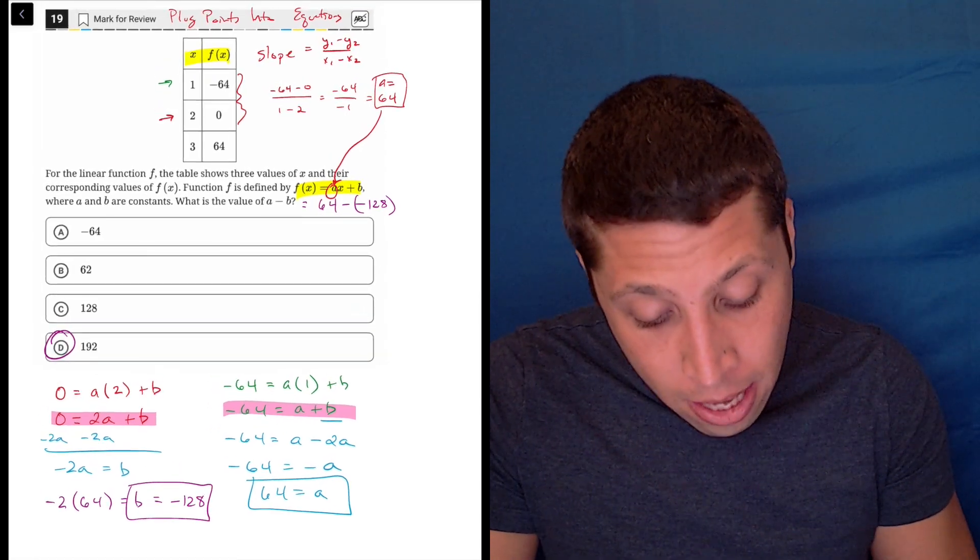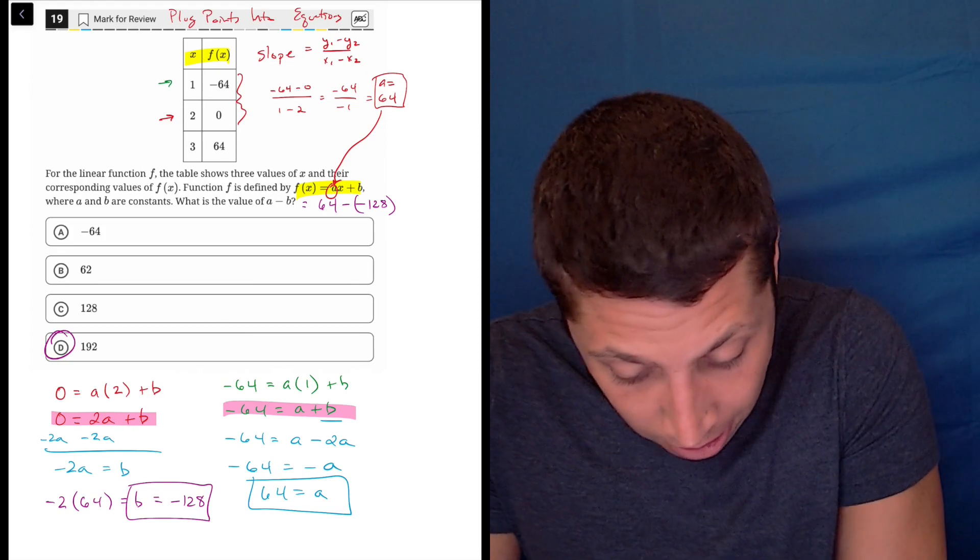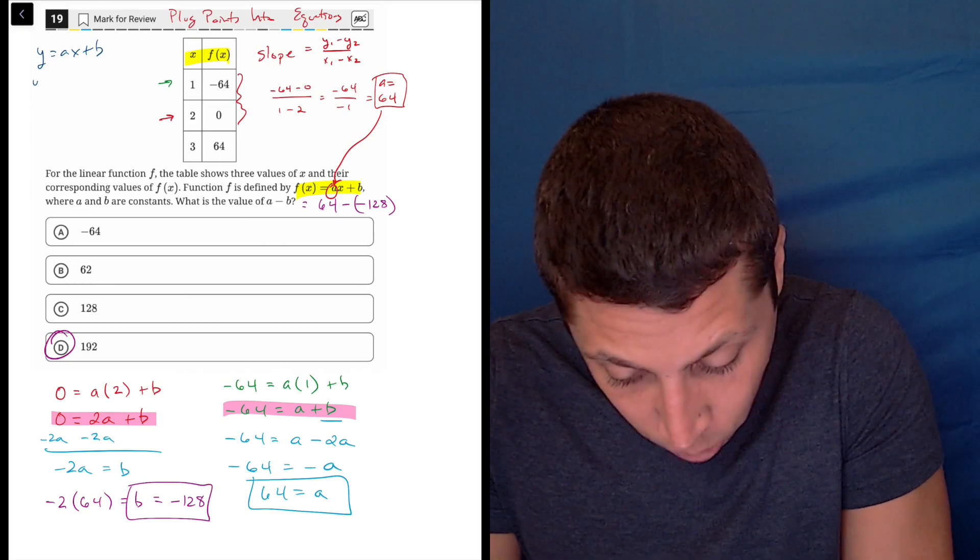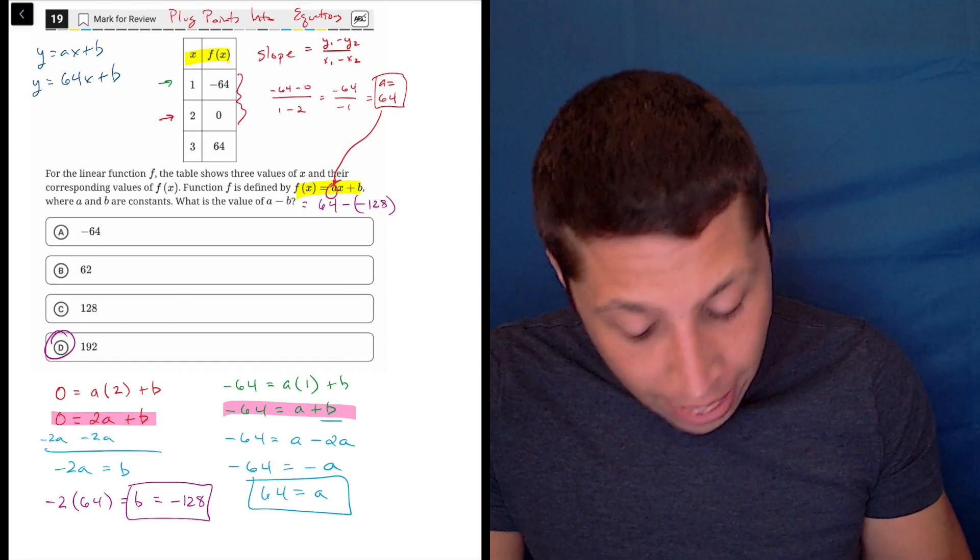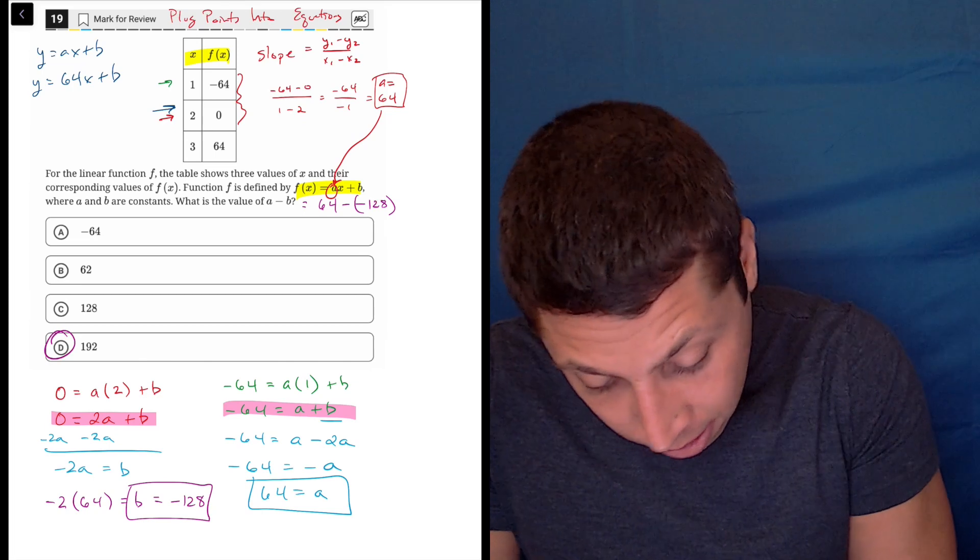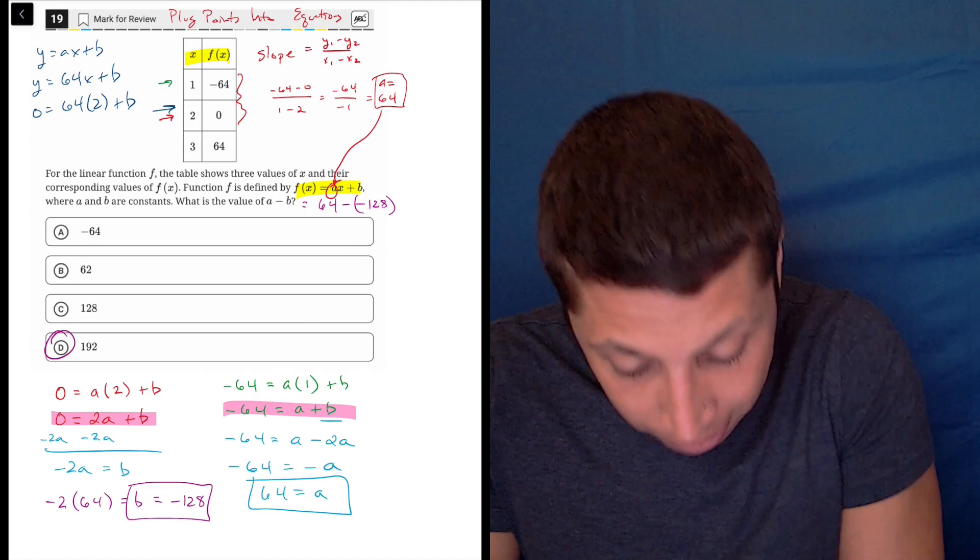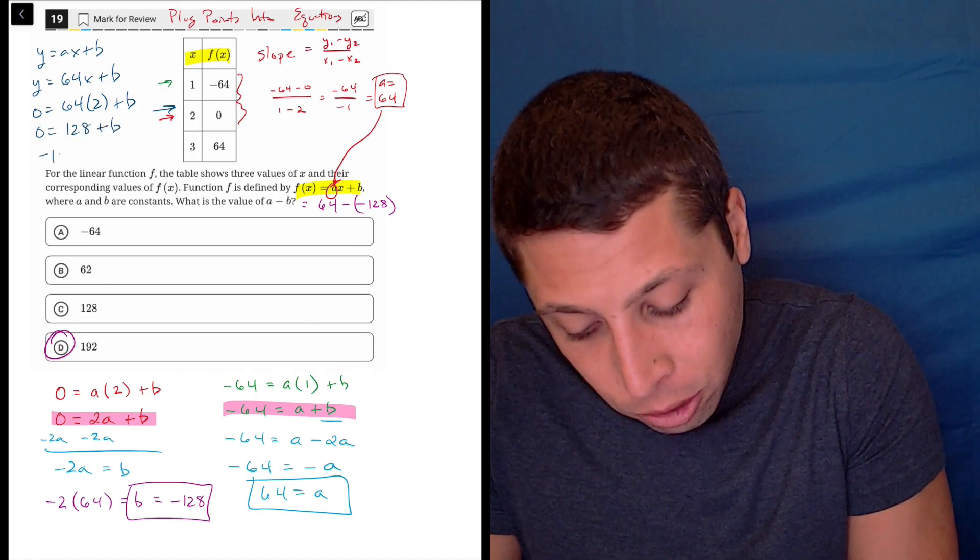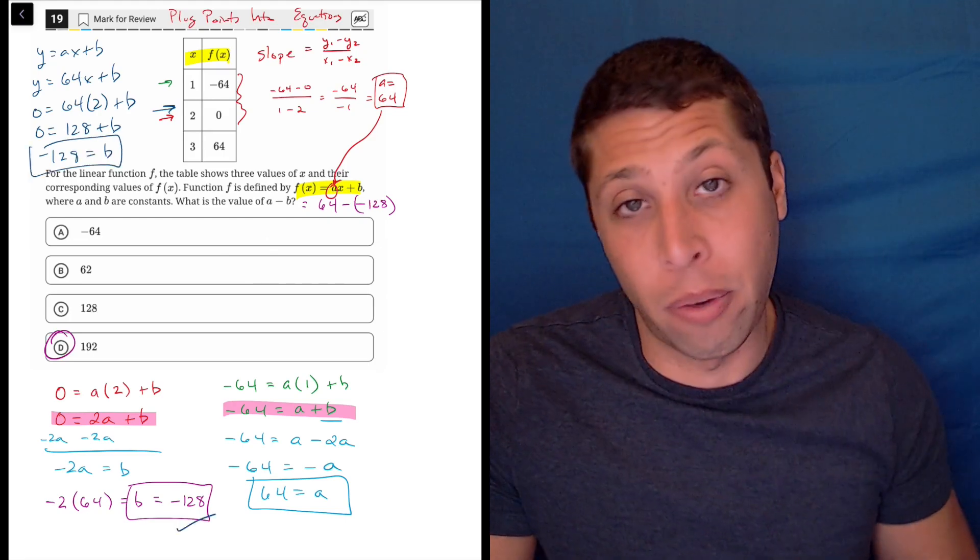And then if we wanted to find b, we would still plug points into equations. We would take the y equals ax plus b. We now have y equals 64x plus b. Literally take any of the points, and that's going to make the x and the y disappear. So let's do this point. So 0 is equal to 64 times 2 plus b. So 0 is equal to 128 plus b. Subtract the 128, and there it is. b is negative 128. Same thing we found before.